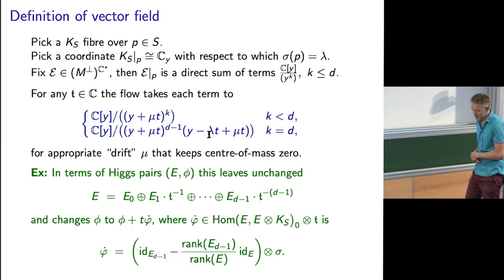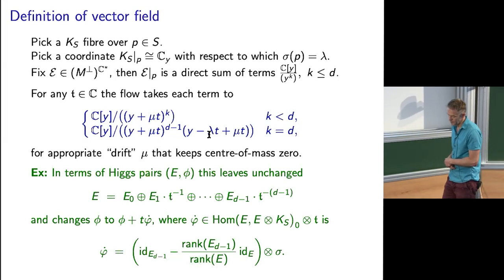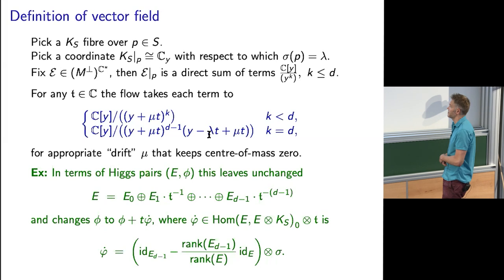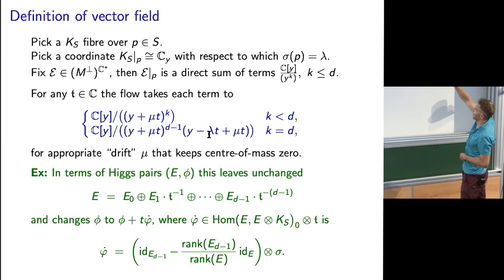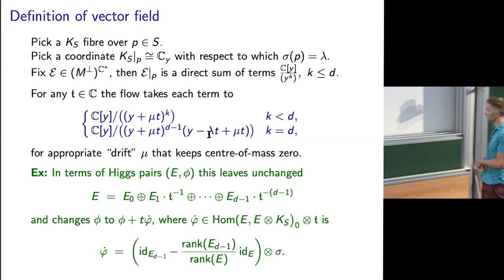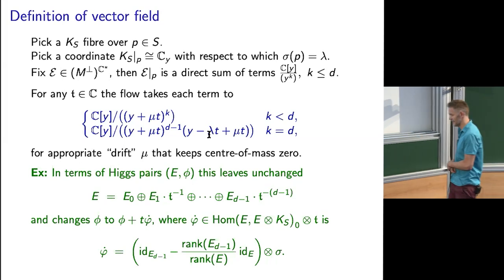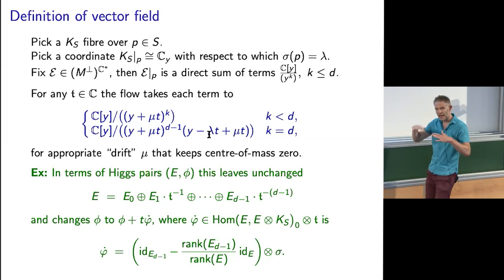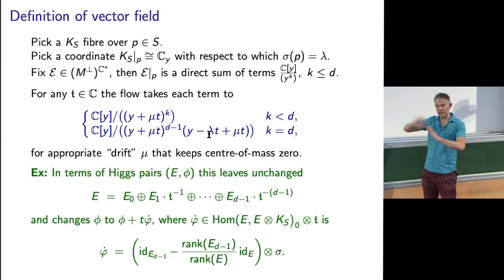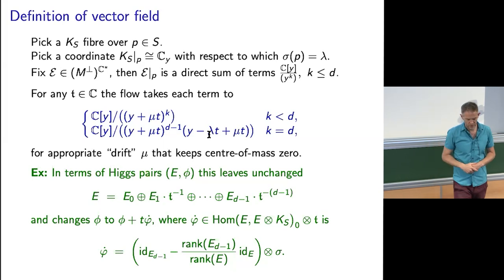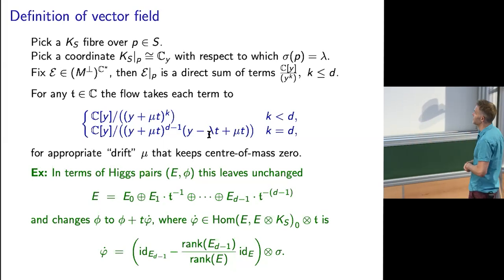It's easiest to write down and make rigorous in the Higgs language. The exercises check that what I just wrote down amounts to this in Higgs language. In Higgs language we never change the bundle because we're only ever moving vertically — when you push down it doesn't change anything. So the bundle always remains the same; we're just changing the Higgs field.